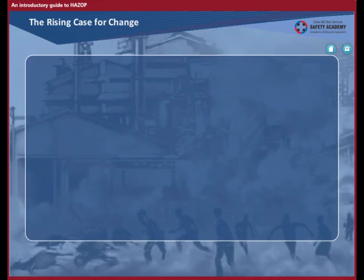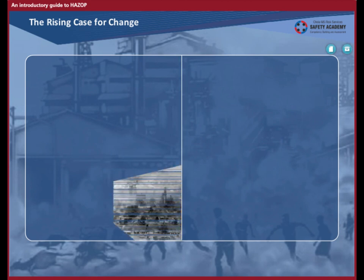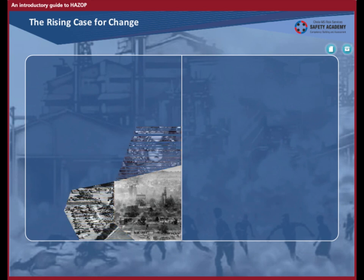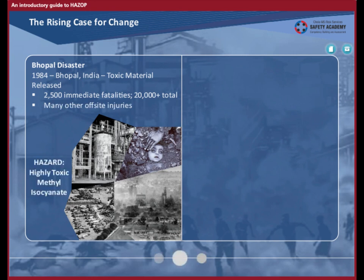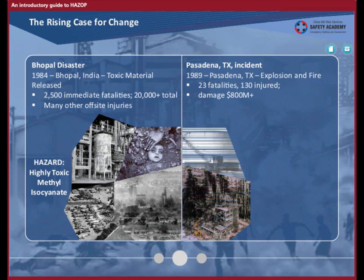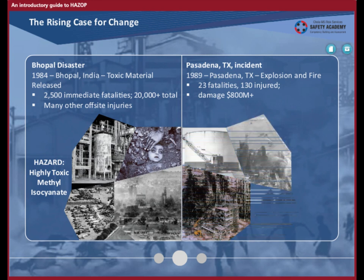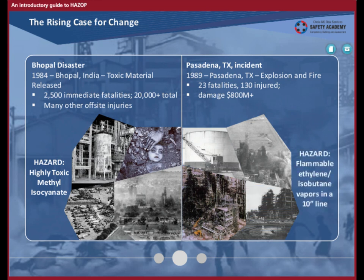Why are organizations a lot more conscious about safety and risk identification and mitigation techniques? Two of the worst industrial disasters in fairly recent times, like the Bhopal gas tragedy in India in 1984 and the Pasadena incident in Texas in 1989, caused many landmark changes. Let's look at the Bhopal gas tragedy closer to see how a periodic process hazard analysis could have prevented the death of over 20,000 people. We will revisit the Pasadena incident again at the end of this course.